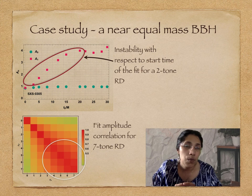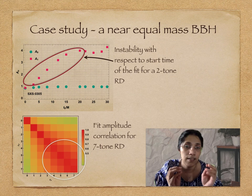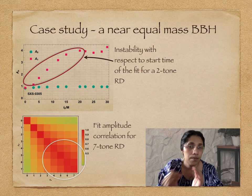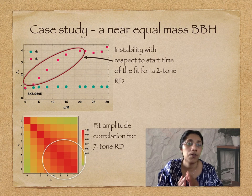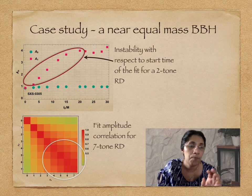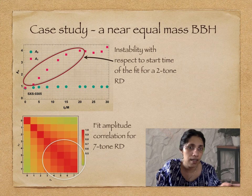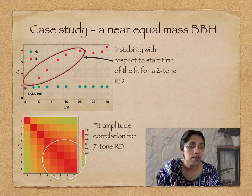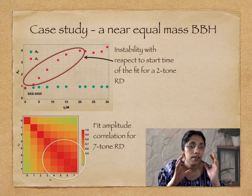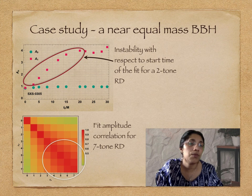Next, we examine how the number of overtones in the ringdown model affects the fitting. We now fit for 7 overtones instead of 2, and look at the correlation matrix of the fit amplitudes. Redder areas in the graph indicate larger correlations. For N=1 and N=2 overtones, correlations are not large, but as you increase the number of overtones, their amplitudes become correlated with each other—a non-negligible amount of power appears in the correlation matrix. We therefore need to be careful about how many overtones we include in the analysis.